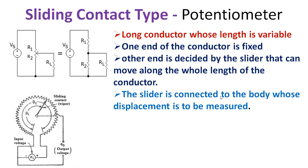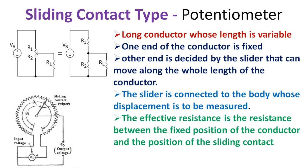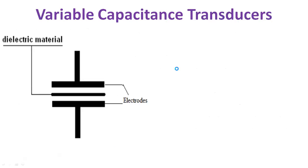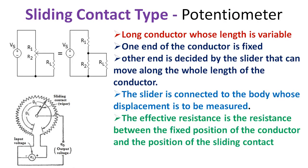One end of the conductor is fixed while the position of the other end is decided by the slider or brush that can move along the whole length of the conductor. The slider is connected to the body whose displacement is to be measured. When the body moves, the slider also moves along the conductor, so its effective length changes and its resistance also changes. The effective resistance is measured between the fixed position of the conductor and the position of the sliding contact. The value of the resistance is calibrated against the input quantity whose value can be measured directly.